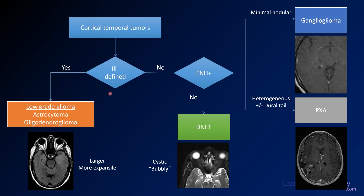Going through this flowchart: if it's ill-defined, you're thinking about low-grade gliomas — astrocytomas and oligodendrogliomas. They tend to be larger and more expansile. Here you see an example where the left temporal lobe is expanded and ill-defined. If it's well-defined and you don't have enhancement, and it's a little bit bubbly looking like in this case, you're thinking about a DNET.